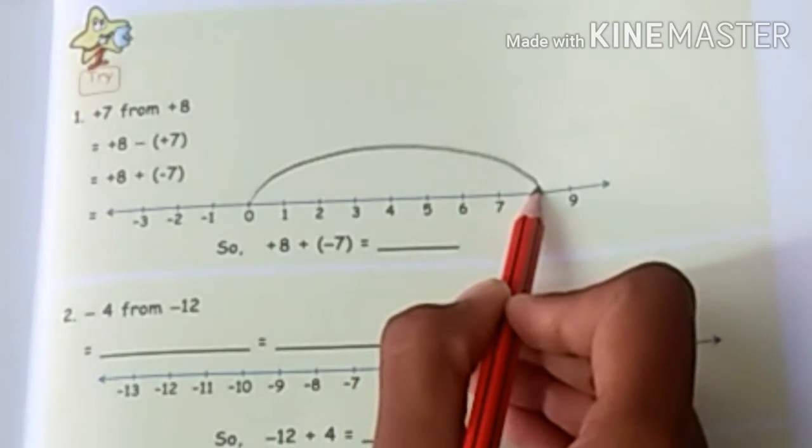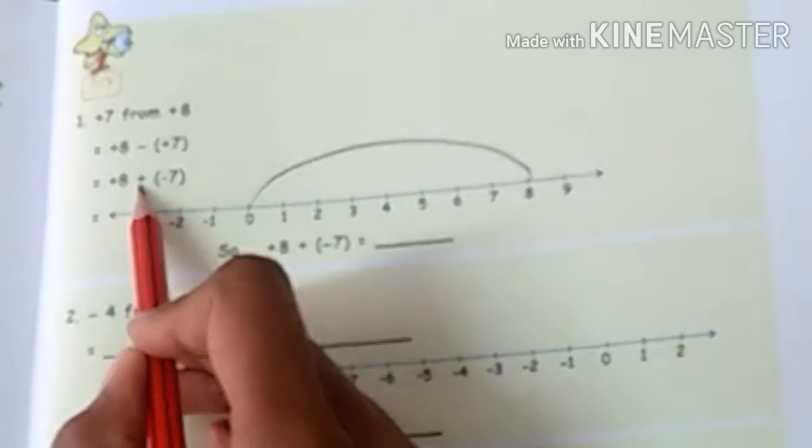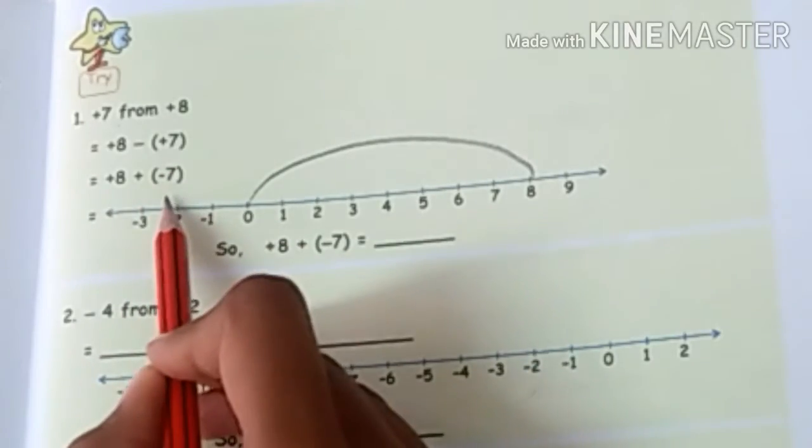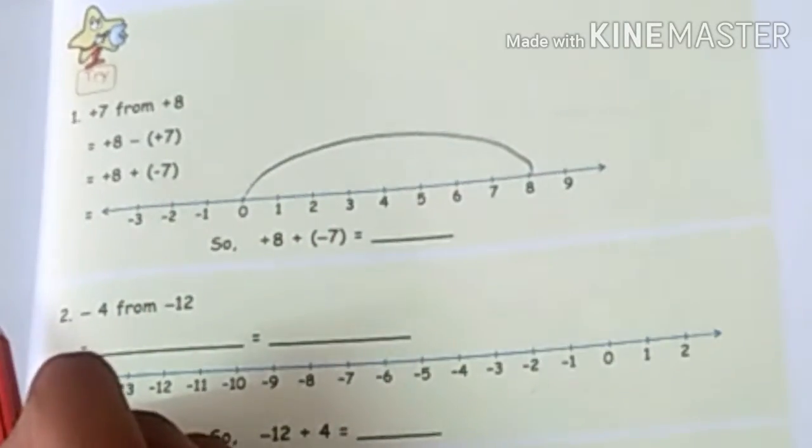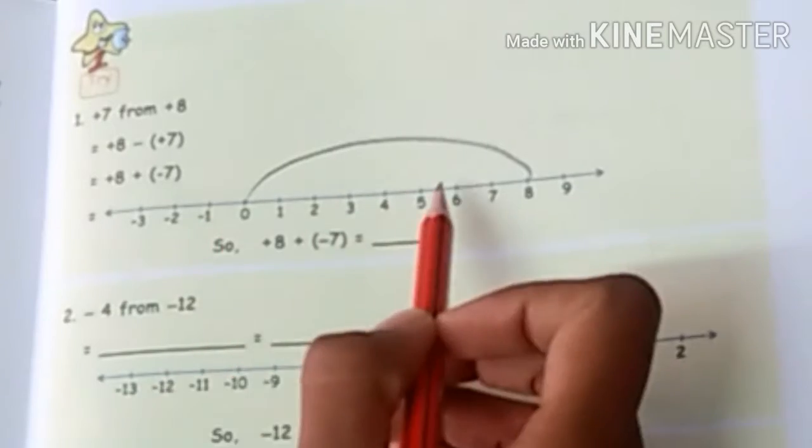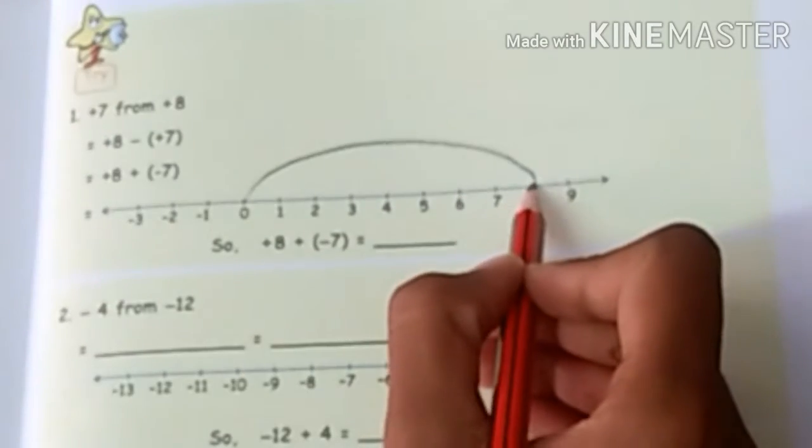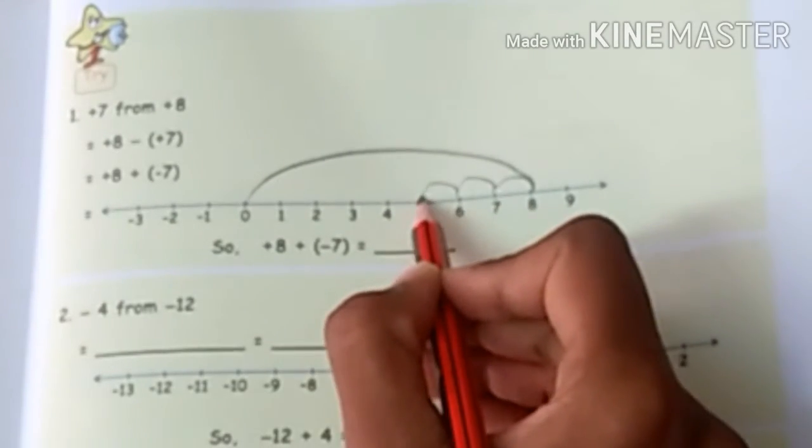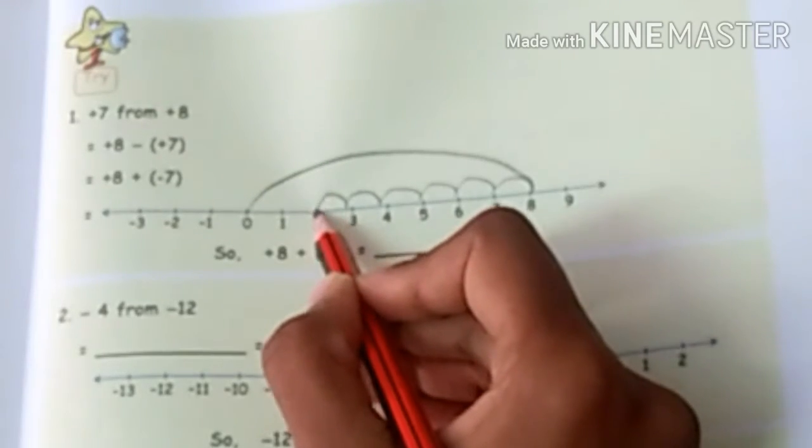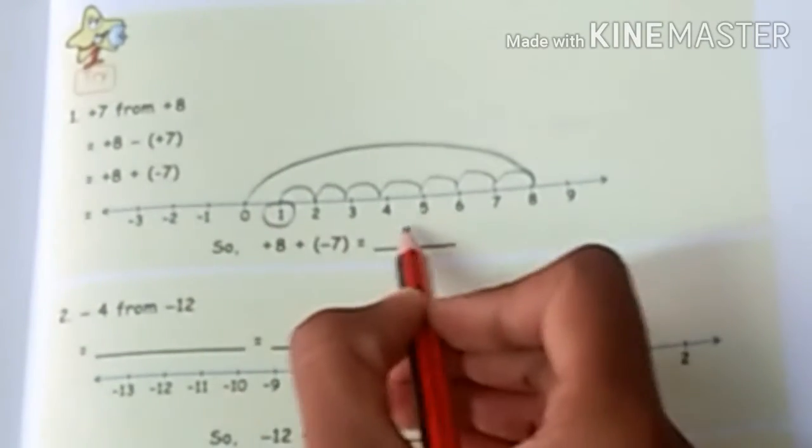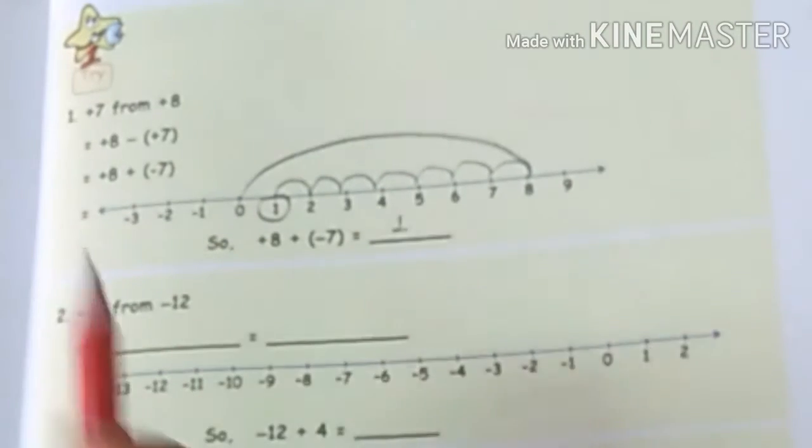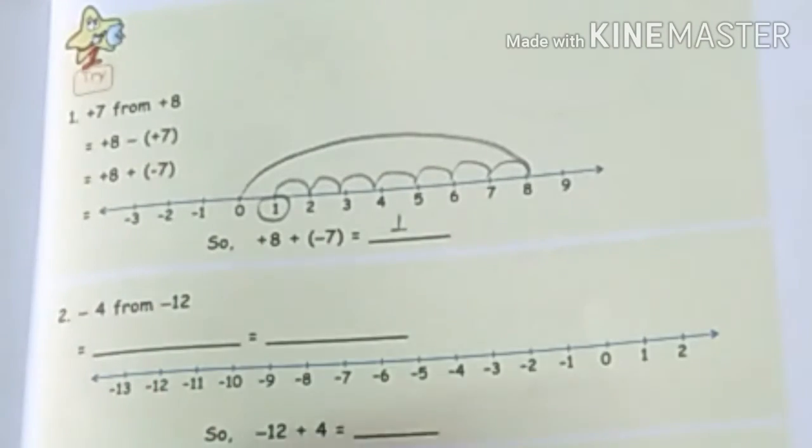So, plus 8 plus minus 7. First we go to positive 8, which means from 0 we have to go to the right hand side because the positive number is on the right side. Then we have to add minus 7, which means we will go left hand side. We will do 1, 2, 3, 4, 5, 6, 7 and the answer is 1. So when we do plus 8 minus 7, the answer is 1.